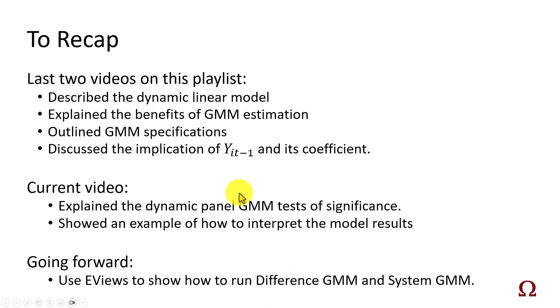So, in the last two videos, the first described the dynamic linear model, explained the benefits of GMM estimation, and outlined GMM specifications. The second one discussed the implication of the persistence variable, the lagged dependent variable, and its coefficient. This current video, I hope, has explained the dynamic panel GMM tests of significance and showed an example of how to interpret the model results. Going forward, I'm going to use eViews to show how to run difference GMM and system GMM. So, stay tuned.